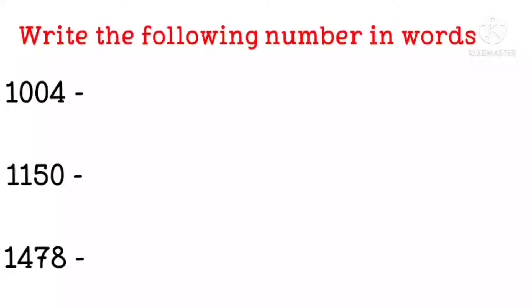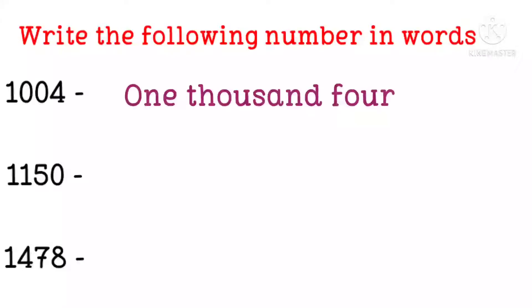Ok children. The first one is one thousand four. We know the spelling of one, and thousand, and four. So now we can write it: one thousand four.